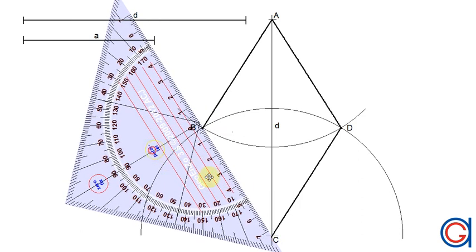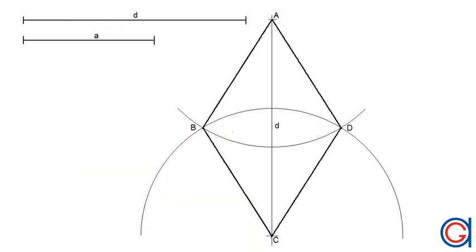So here we have a rhombus given its longer diagonal and one of its sides. I hope this video has helped you. Smash the like button and subscribe to our YouTube channel. Thank you, until next time.